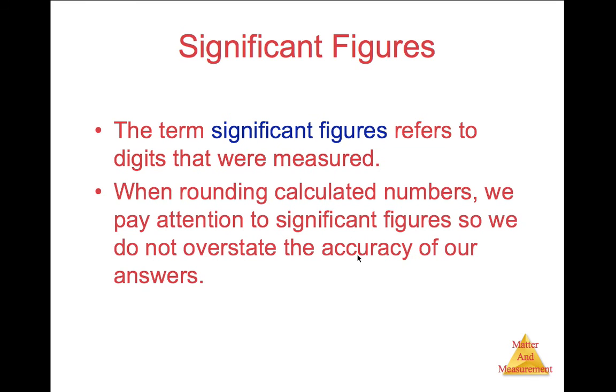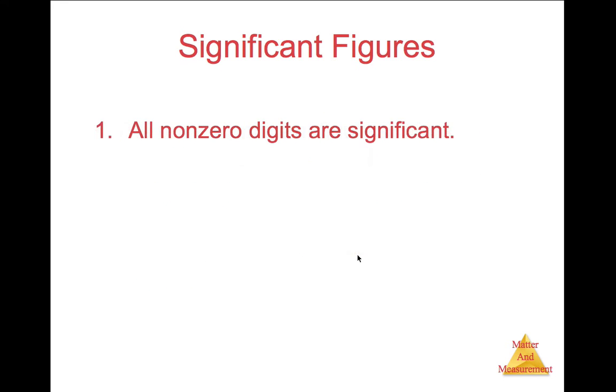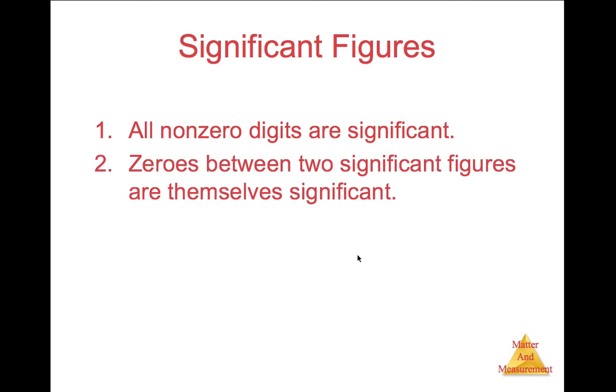When rounding calculated numbers, we pay attention to significant figures so we don't overstate the accuracy of our answers. There are several rules for determining if a figure is significant. First of all, all non-zero digits are significant. Second of all, zeros between two significant figures are themselves significant.